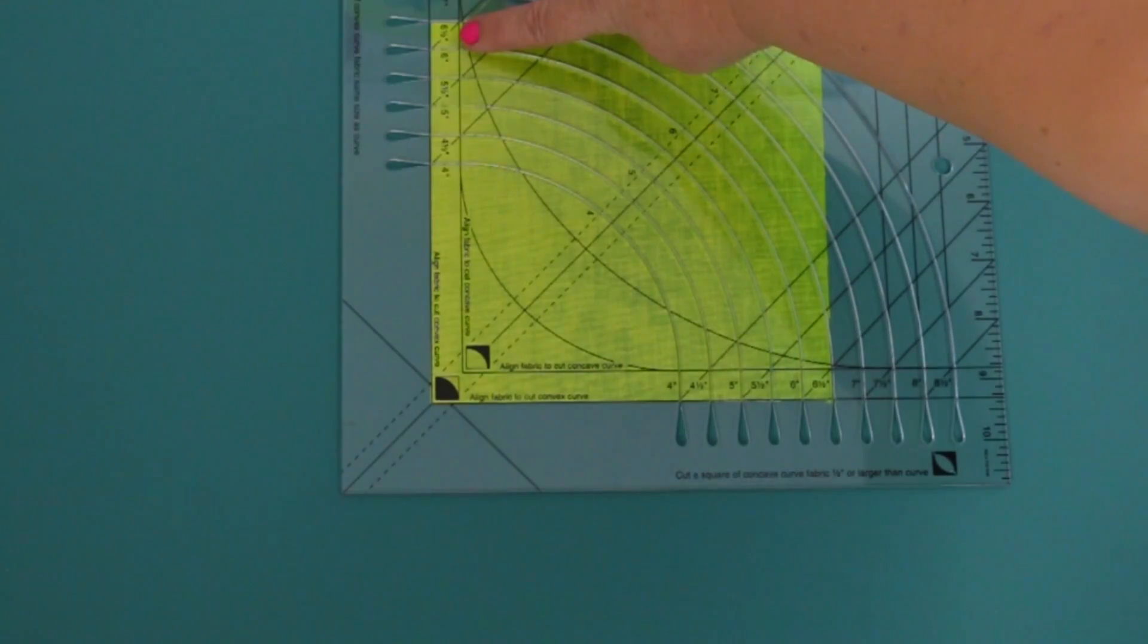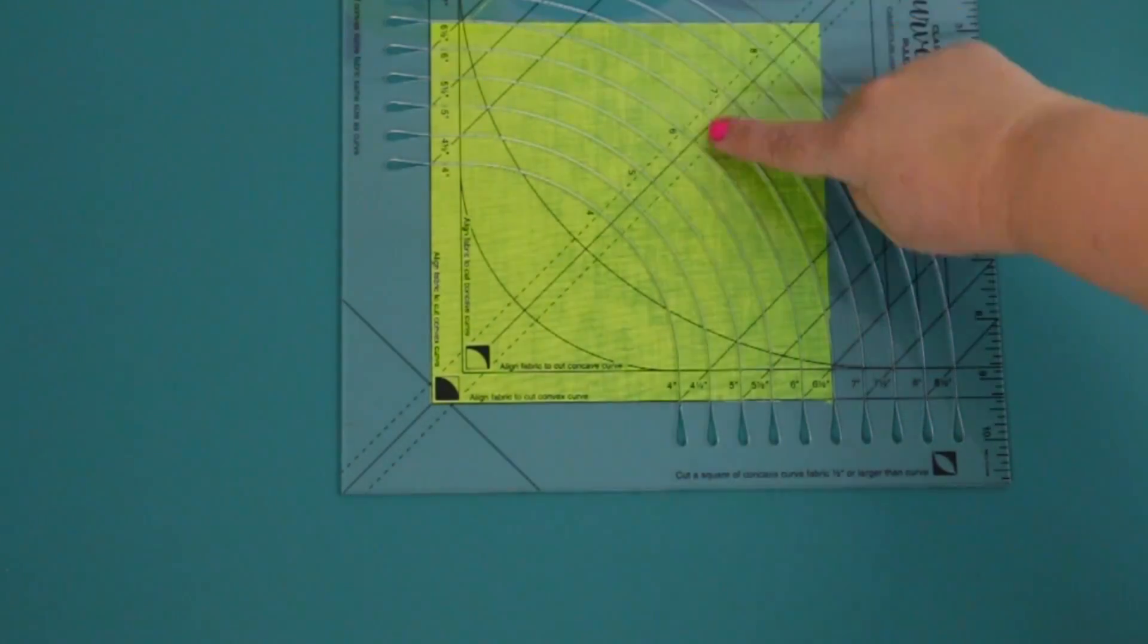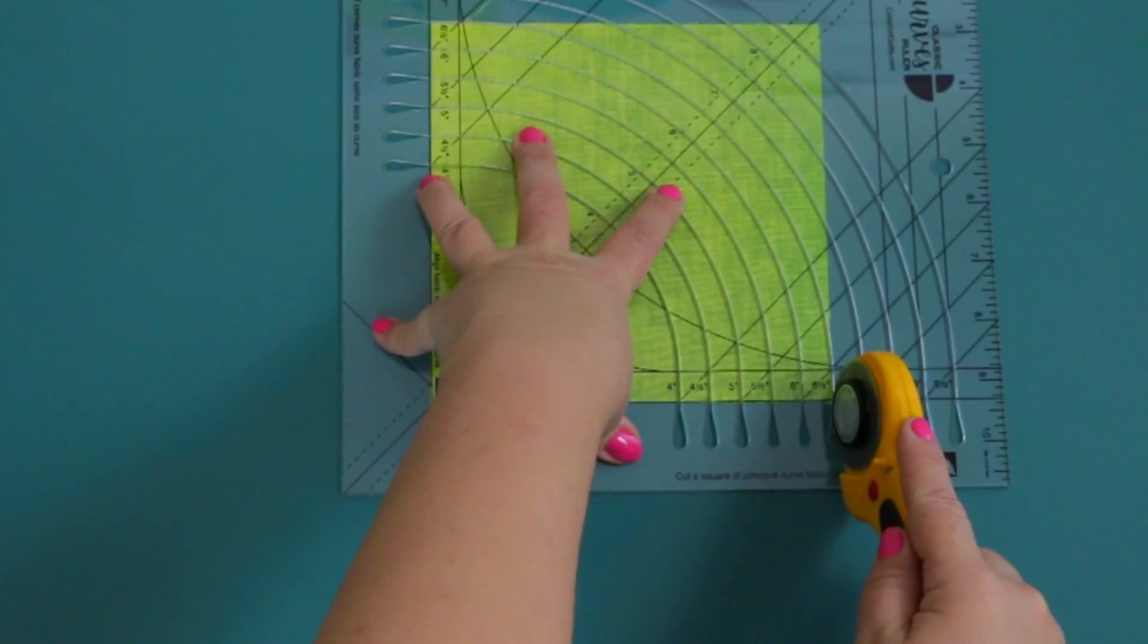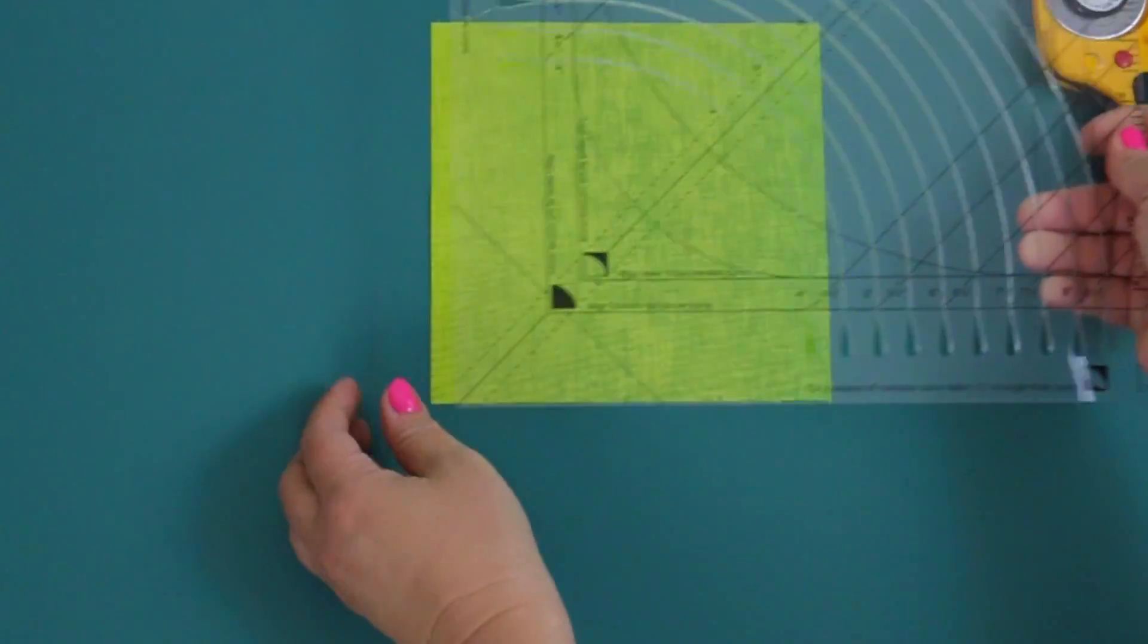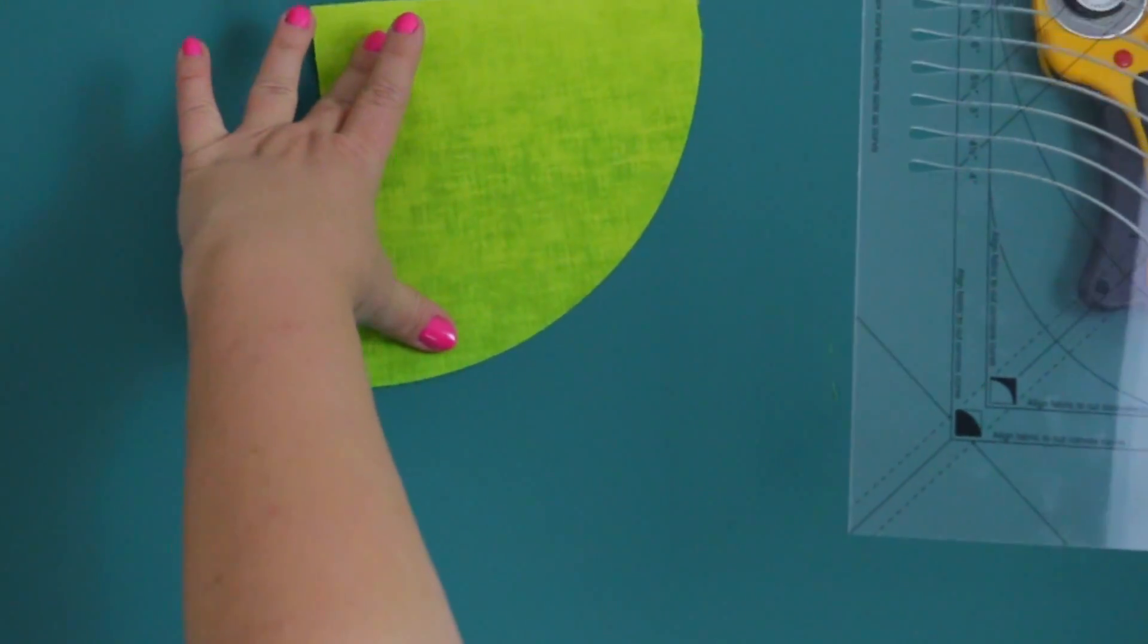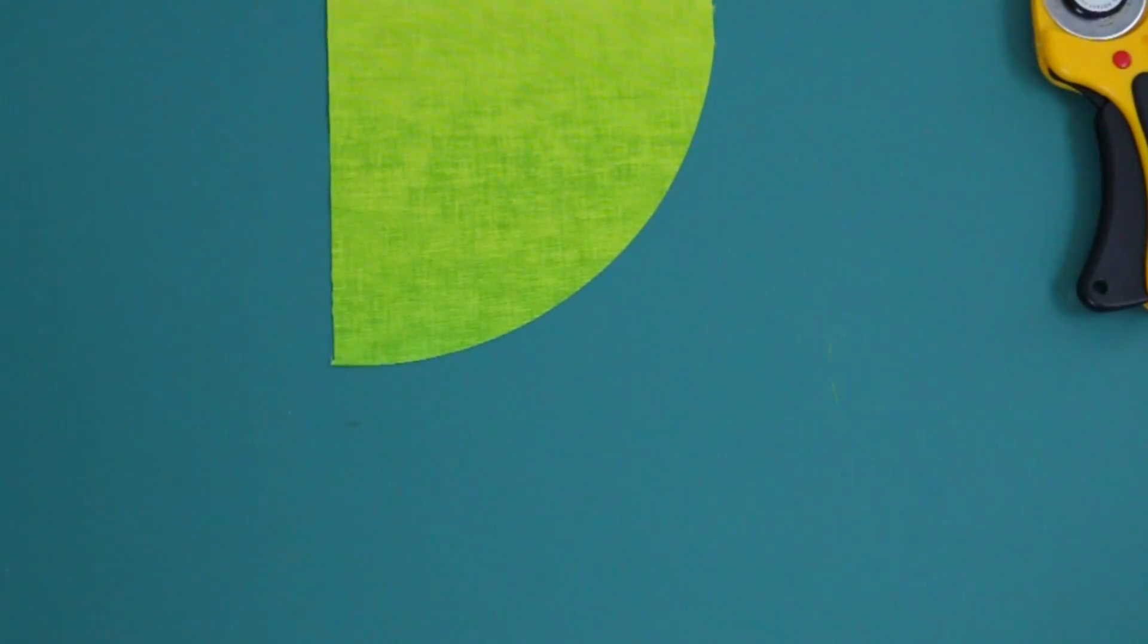Now, keep in mind, it's whatever size curve and square you want. So if you wanted a 3-1/2-inch square, you would have gone with the 4. If you would have wanted an 8-inch square, you would have gone with the 8-1/2. And there is your convex curve. Pretty easy, huh?